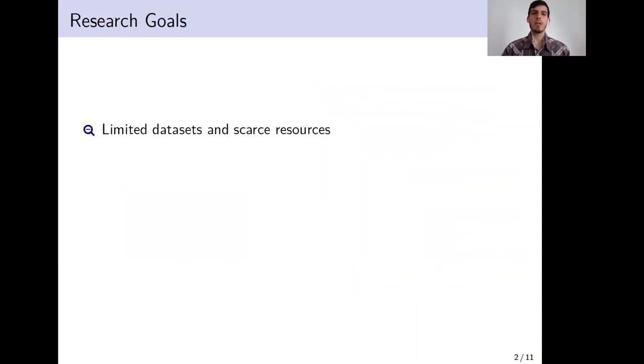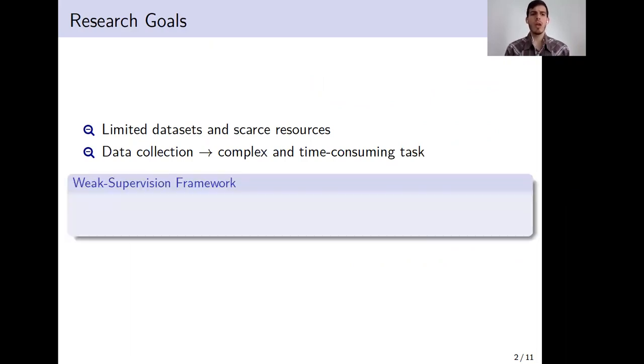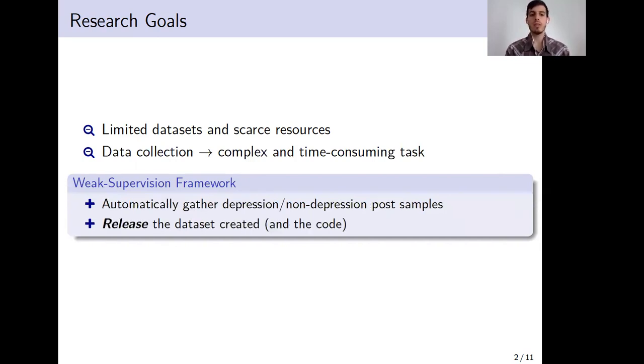Although, despite the great importance that research on mental health through the analysis of social media activity has, datasets are limited and resources are scarce. In fact, collecting large amounts of labeling data could be a complex and time-consuming task. And for this reason, in this work, we present a weak supervision framework along with the methodology to automatically gather depression and non-depression post samples. Moreover, we release the dataset created using this methodology.